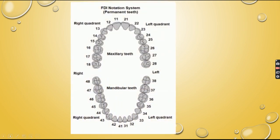There are four quadrants: first, second, third, and fourth. The first quadrant starts with 11 and ends with 18. The second quadrant starts with 21 and ends with 28. This is the maxillary arch — right and left. The mandibular arch runs from 31 to 38 in the left quadrant and 41 to 48 in the right quadrant.